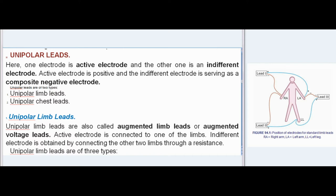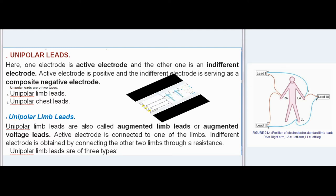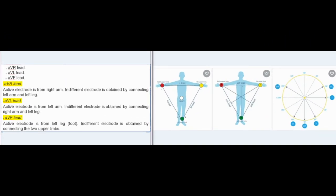AVR Lead: Active electrode is from the right arm; indifferent electrode is obtained by connecting left arm and left leg. AVL Lead: Active electrode is from the left arm; indifferent electrode is obtained by connecting right arm and left leg. AVF Lead: Active electrode is from the left leg (foot); indifferent electrode is obtained by connecting the two upper limbs.